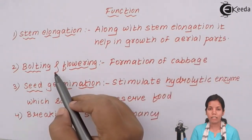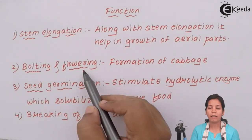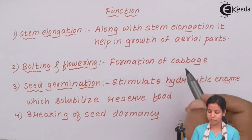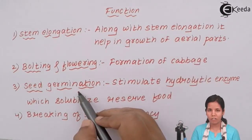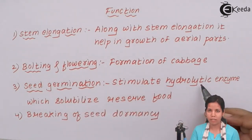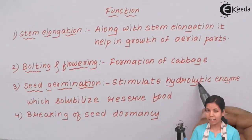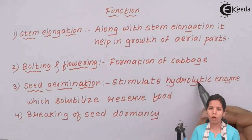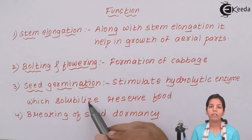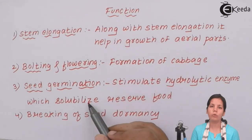The next function is bolting and flowering — bolting means the formation of the various layers of cabbage. Next is seed germination. During seed germination, gibberellic acid helps to produce hydrolytic enzymes. Hydrolytic means breakdown using water or hydrogen. These hydrolytic enzymes use the reserved, that is stored, food material present inside the cotyledon of the seed and help the plant to grow.